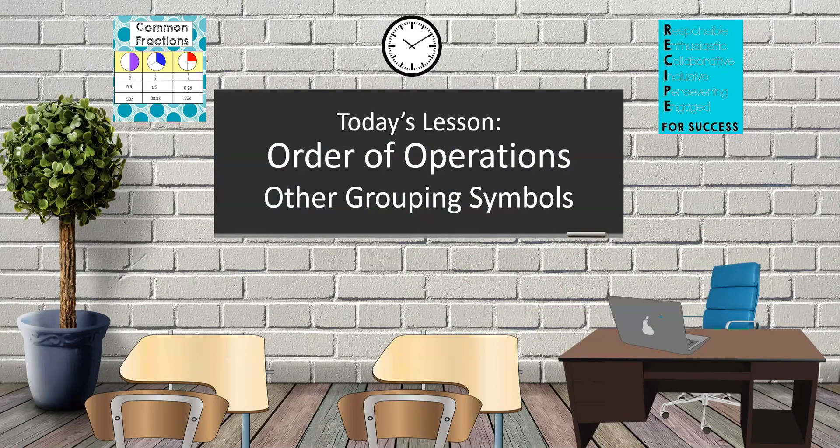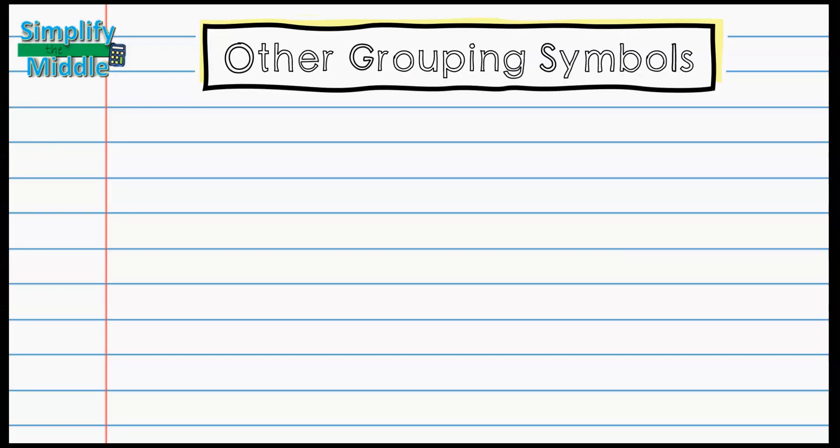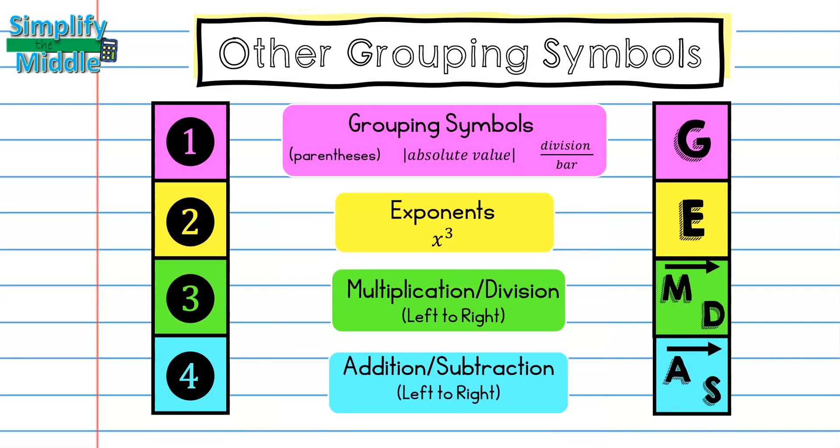Hi and welcome to today's lesson: order of operations, other grouping symbols. In our previous lessons we talked about parentheses, exponents, multiplication, division, and addition, subtraction. This lesson we're going to focus specifically on other types of grouping symbols besides parentheses: absolute value and division bars.